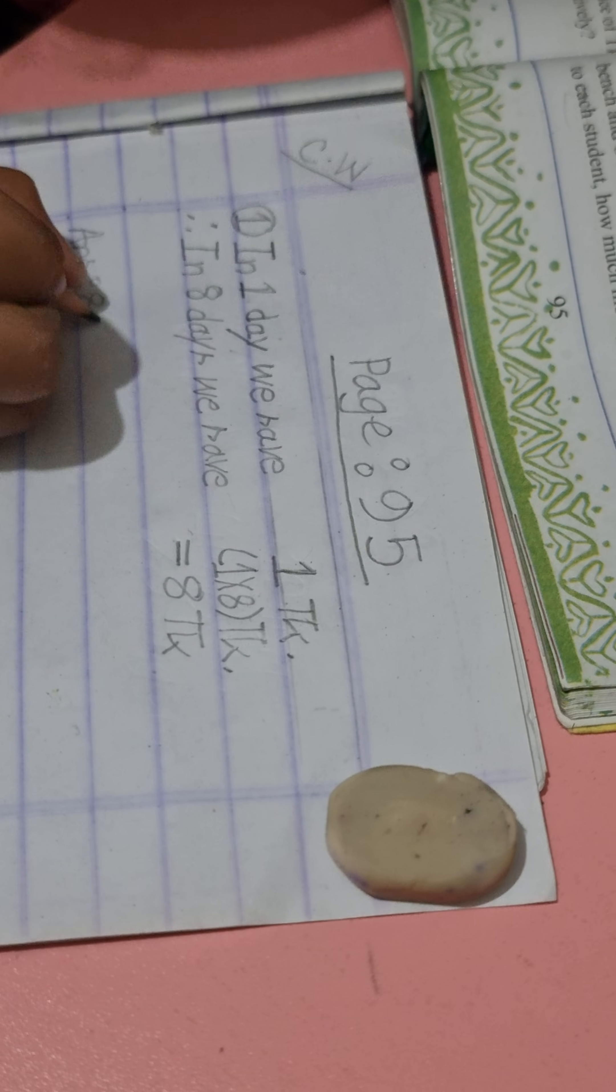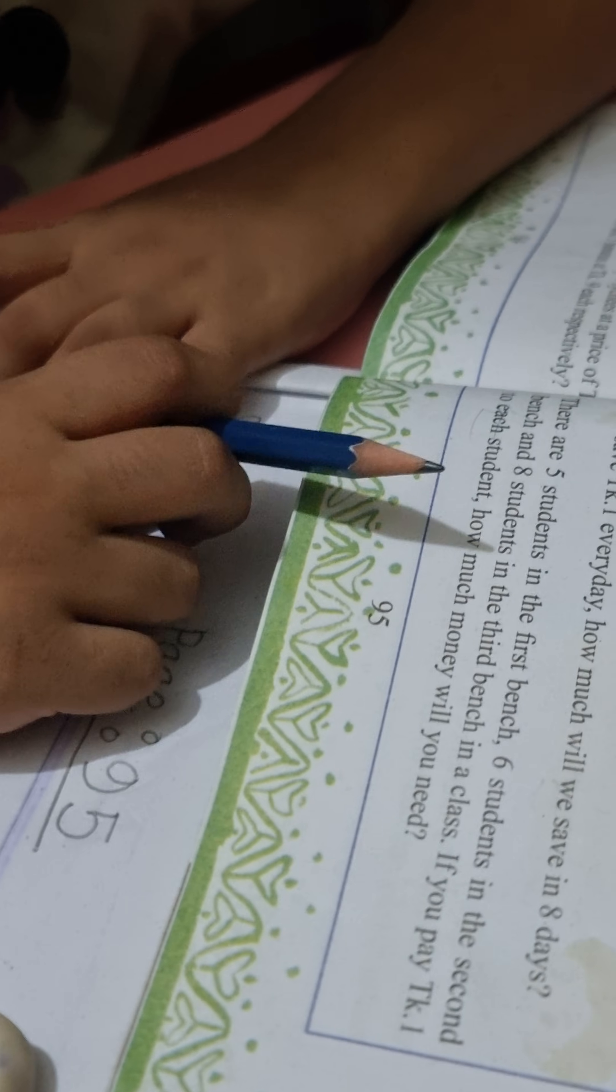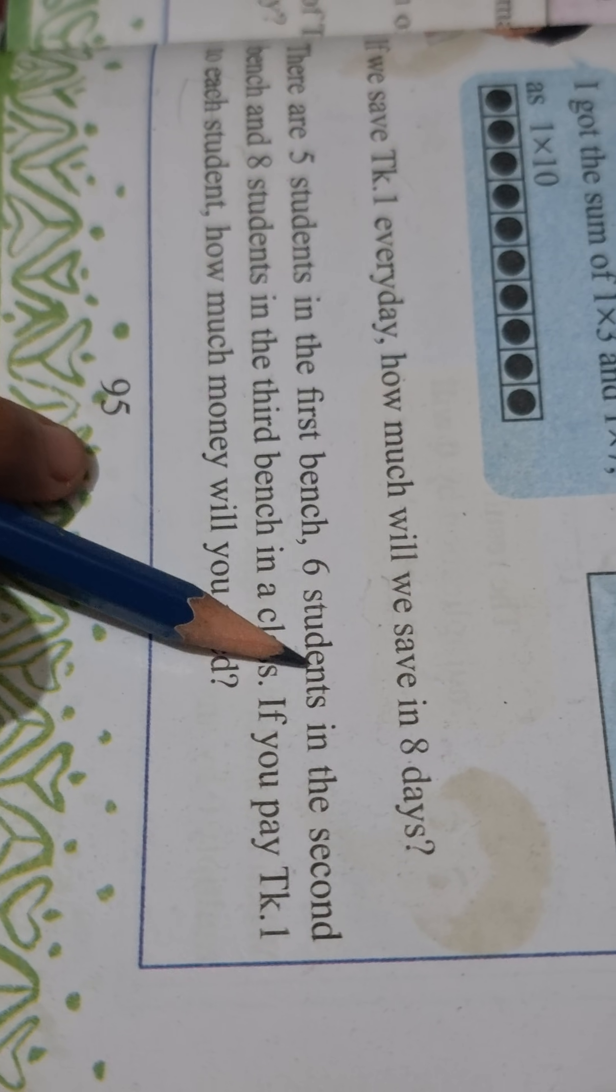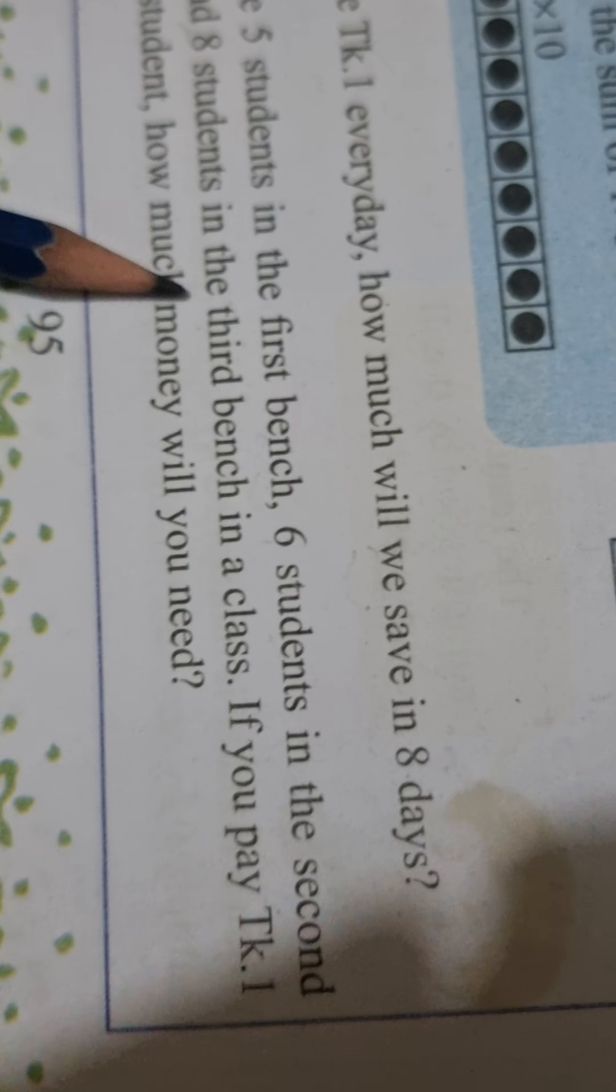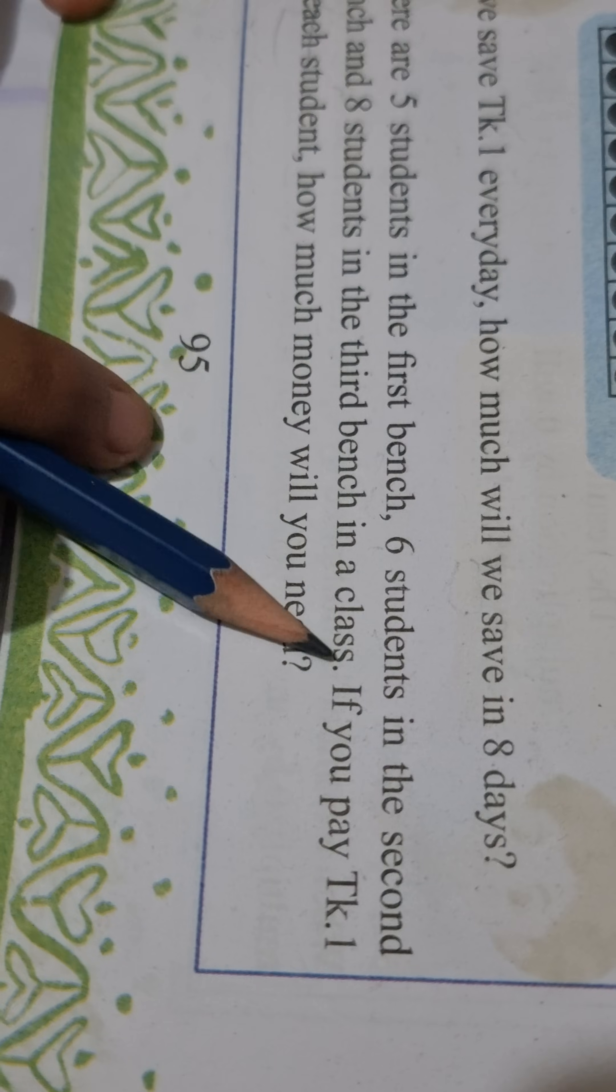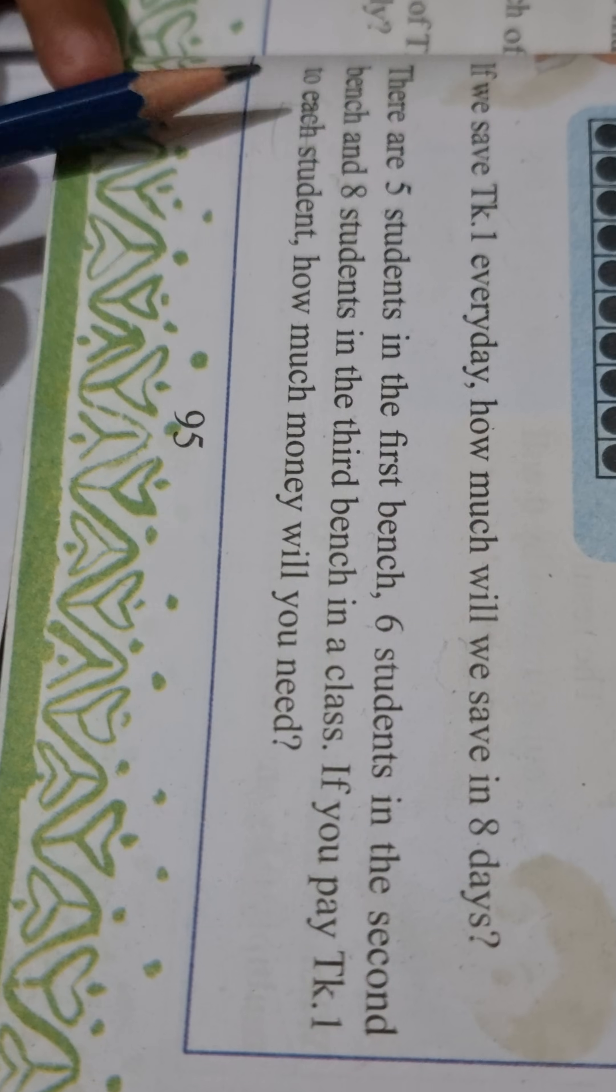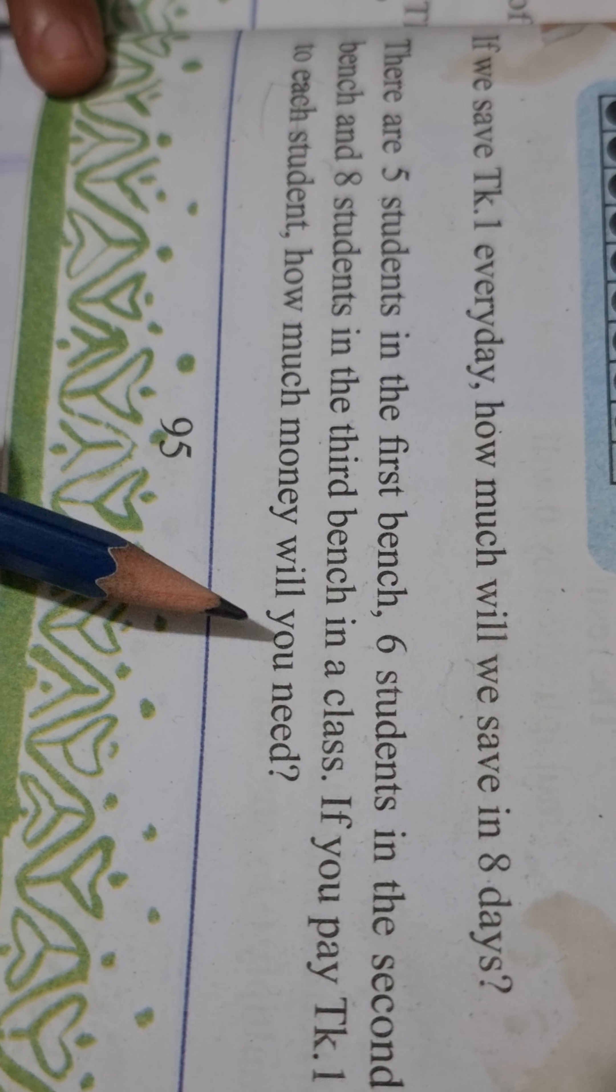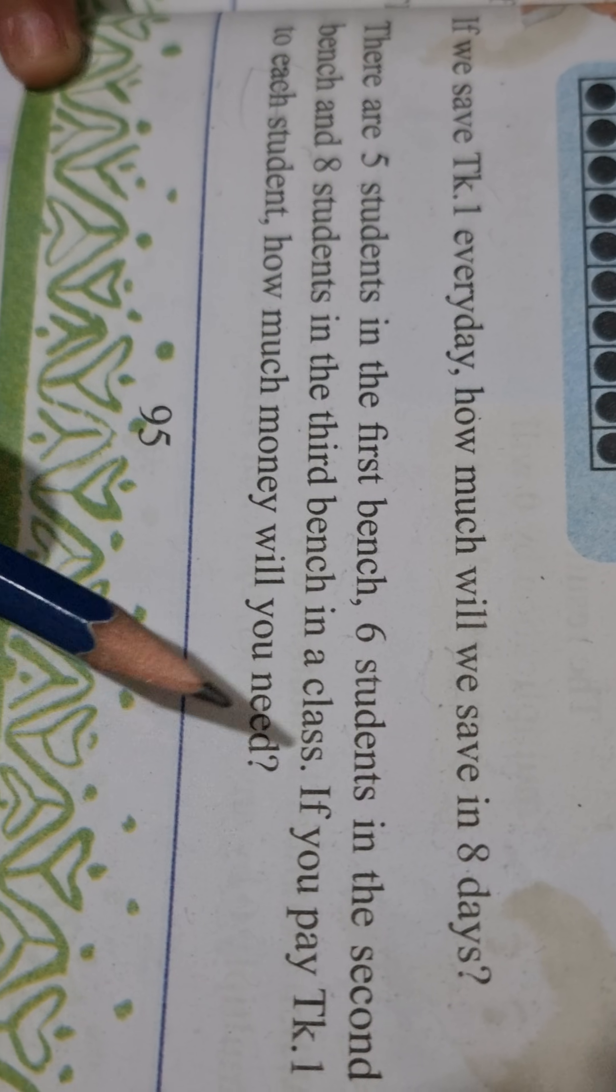Answer: 8 taka. Now, problem number two. There are 5 students in the first bench, 6 students in the second bench, and 8 students in the third bench in a class. If you pay taka 1 to each student, how much money will you need?